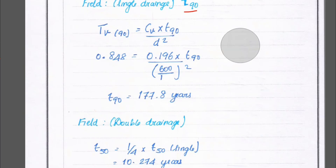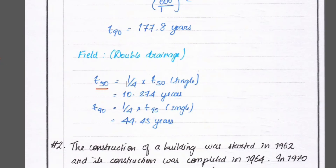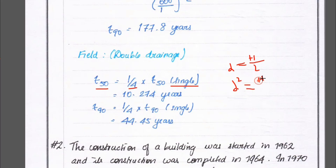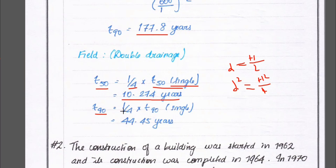Now we find the double drainage results. For double drainage, D = H/2, so D² = H²/4, meaning we multiply the single drainage time by 1/4. For 50 percent consolidation: T₅₀ = 1/4 × 41.67 = 10.274 years. Likewise, for 90 percent consolidation: T₉₀ = 1/4 × 177.8 = 44.45 years.